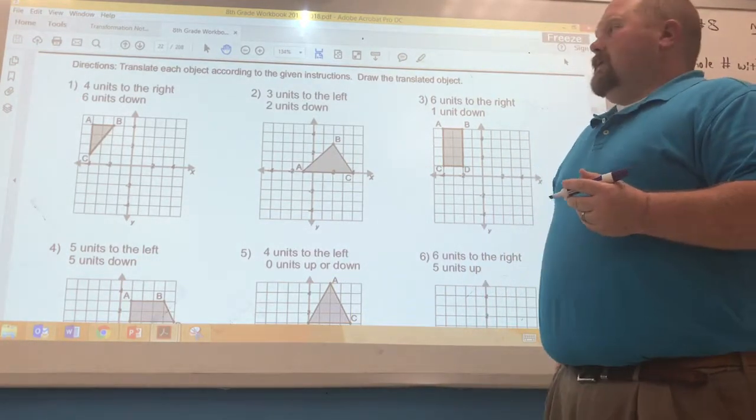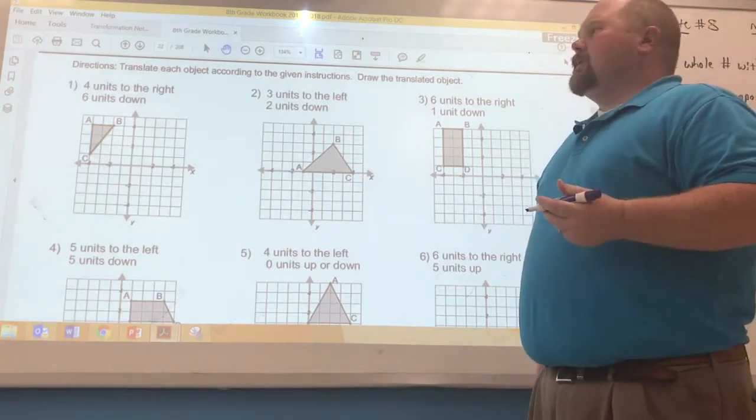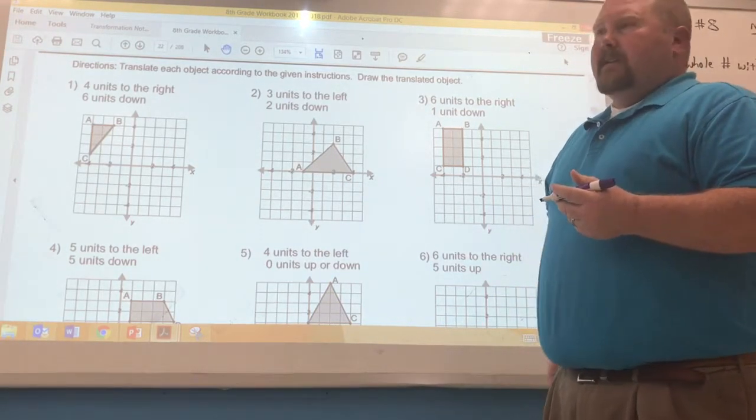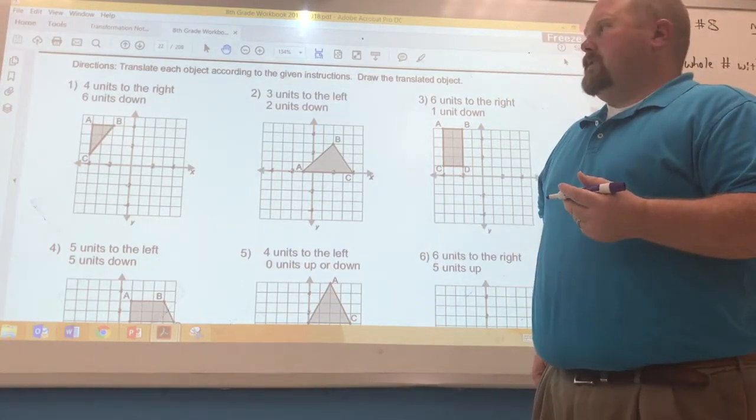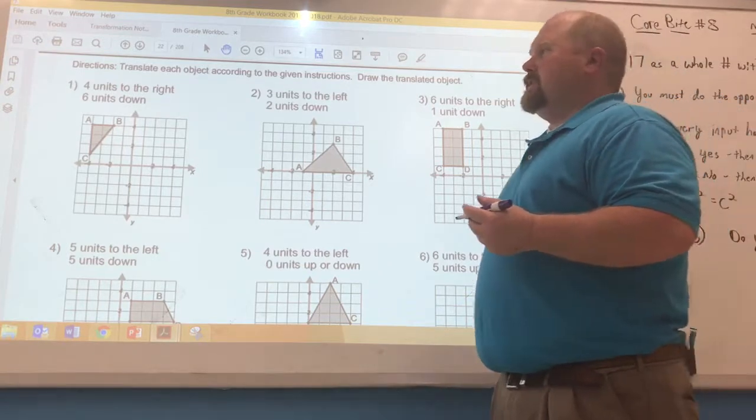So on a translation, it's on a two-dimensional plane, and the figure is only allowed to slide up, down, left, right. It's not allowed to turn, which would be a rotation, or flip, which would be a reflection. It can only slide and stay in the same orientation that it's already in.